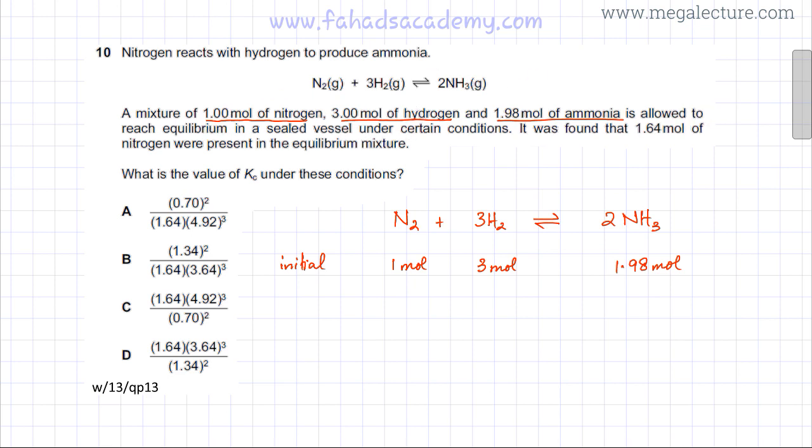So at equilibrium, the amount of moles for nitrogen are 1.64 moles. Now compare these moles with the initial moles. Initially you added 1 mole. Now at equilibrium you have 1.64 moles. That indicates that 0.64 moles extra of nitrogen have been produced.